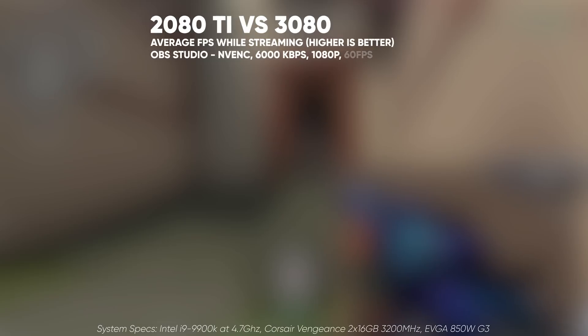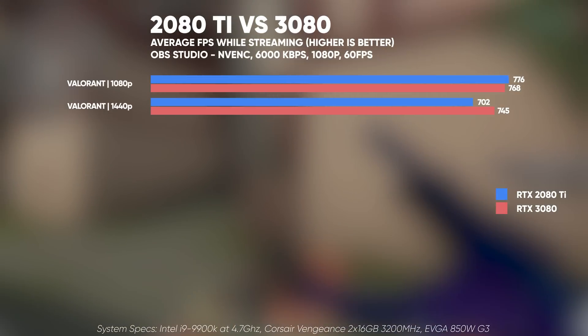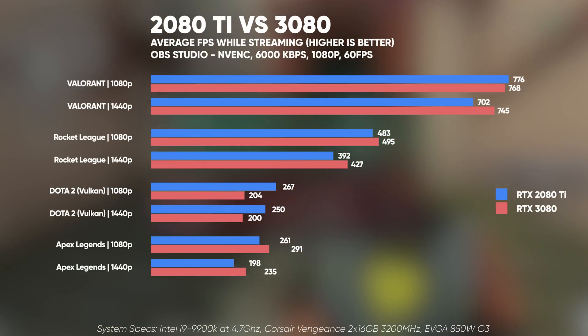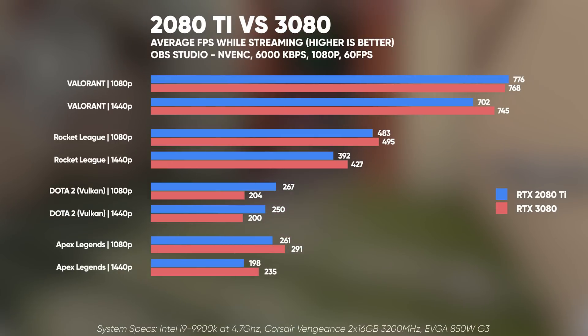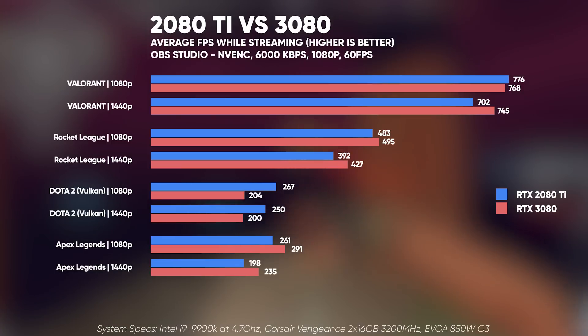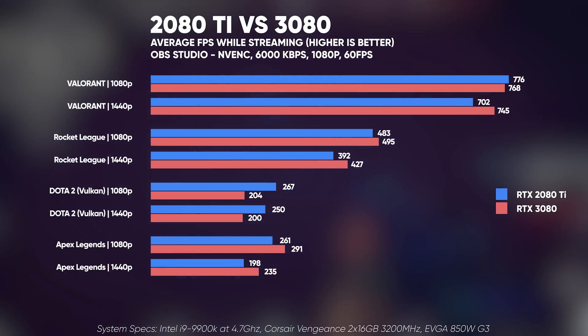So in terms of straight encoding performance there's actually no difference between the 30 series Ampere GPUs and the 20 series Turing GPUs. However, that doesn't necessarily mean you won't see better performance whilst live streaming, as these new 30 series GPUs should be able to push higher frame rates in-game. I ran multiple different tests in various games whilst live streaming at 1080p, 60fps, 6,000 kilobits per second to see how much of a difference there was between last generation's $1,200 2080 Ti and this generation's $700 3080. The performance difference varied with around a 5–10% improvement in frame rates for the 3080, especially at the higher resolution of 1440p.